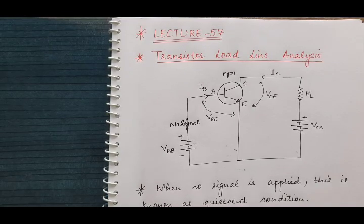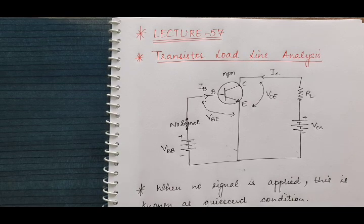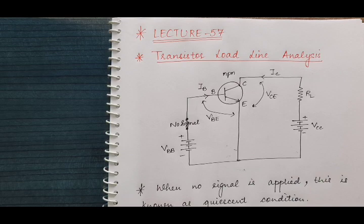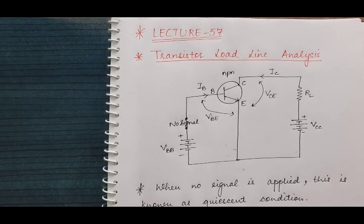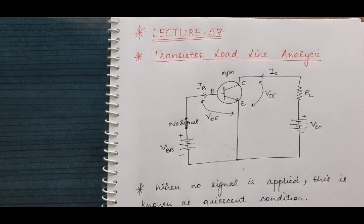Good morning students. In this lecture 57 of electronics, we will discuss our next topic which is transistor load line analysis and transistor biasing. In this transistor load line analysis, first we will consider common emitter transistor amplifier.